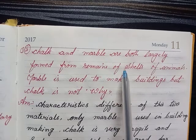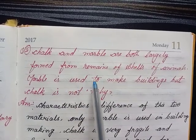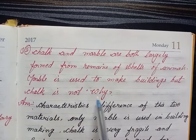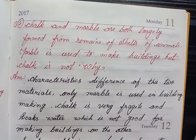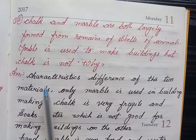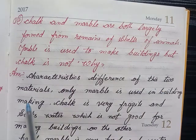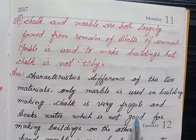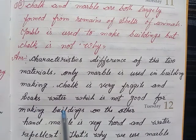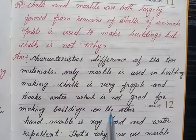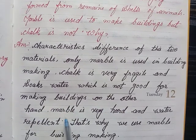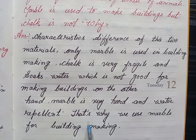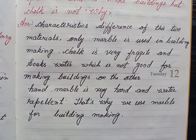Think and answer, second question: chalk and marble are both largely formed from remains of shells of animals — marble is used to make buildings but chalk is not. Why? Answer: marble is used in building making because it is very hard and water repellent. Chalk is very fragile and absorbs water, which is not good for making buildings.